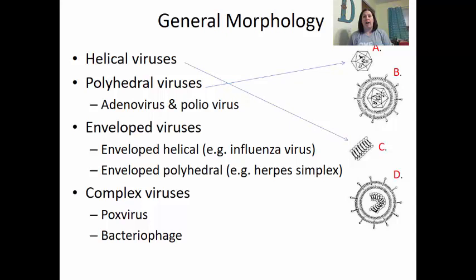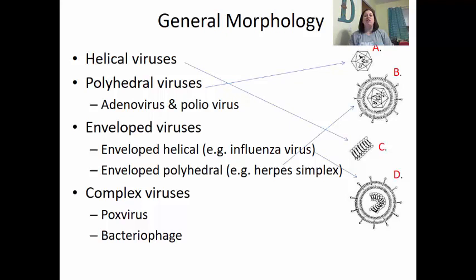Some viruses are enveloped. Helical enveloped viruses have that helical structure with an envelope around it — like influenza, which causes the flu. We also have enveloped polyhedral examples, like herpes simplex, which has a polyhedral structure inside of an envelope. There are also some complex viruses, including pox virus and bacteriophages, which are more complex in their structure.